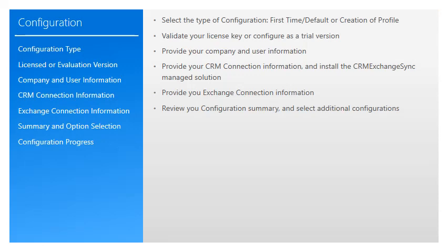There are six steps to the configuration wizard of Exchange Sync for Microsoft Dynamics CRM. These steps are: Product Key Validation, Company and User Information, CRM Connectivity Information, Exchange Connectivity Information, Installation Summary and Configuration Option Selection, and finally, Viewing the Configuration Process and Completing the Configuration.